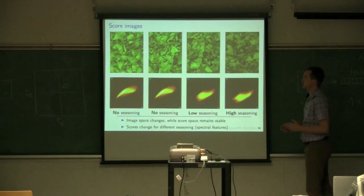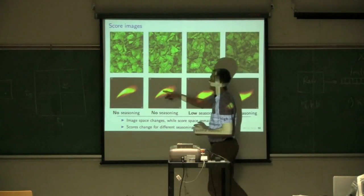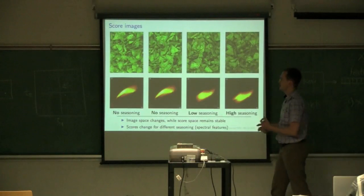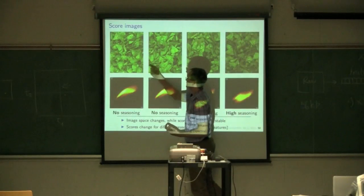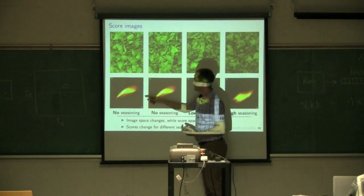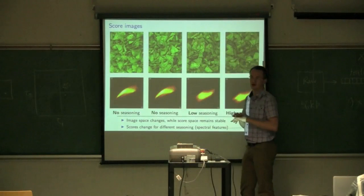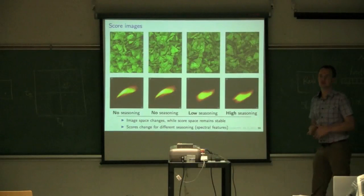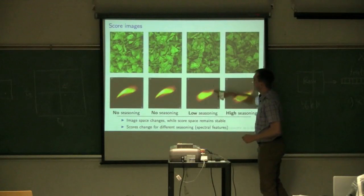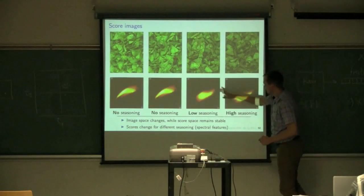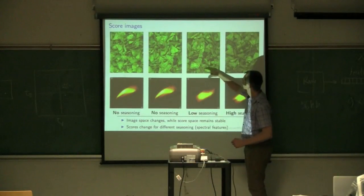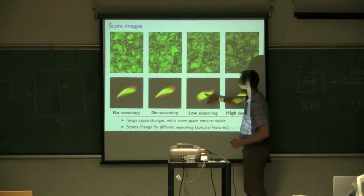The first two correspond to no seasoning. It is no seasoning and the second one is also no seasoning. The reason for showing two particular images are these are two very different images, very different layouts and presentation of the food here. But their score plots are virtually identical. Which is great. And they should be. So we expect that stability in our score space, even though our image space is very dynamic and changing.